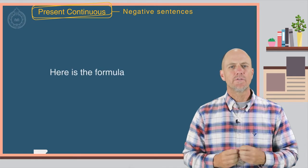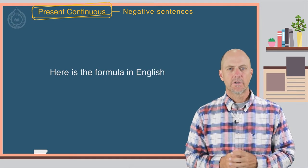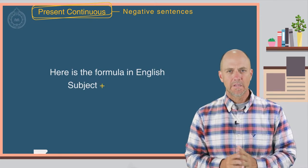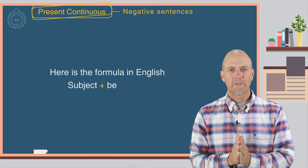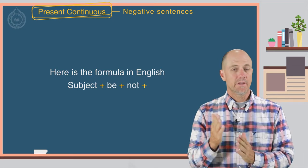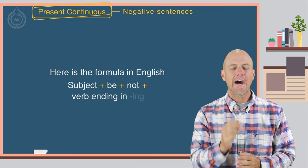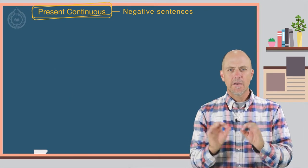Here is the formula in English. Subject plus be plus not plus the verb ending in ing. Here are some examples.